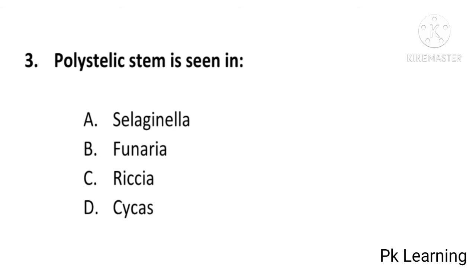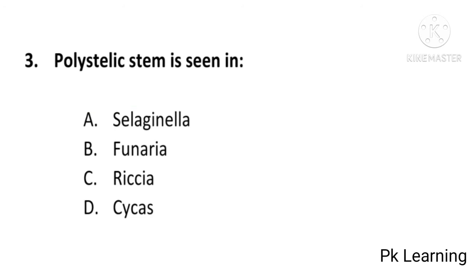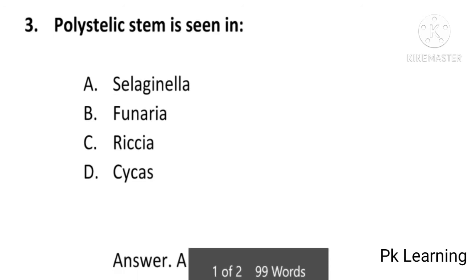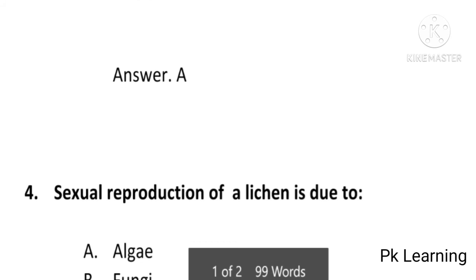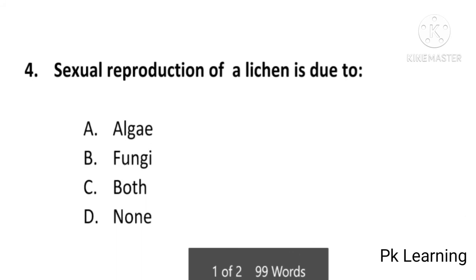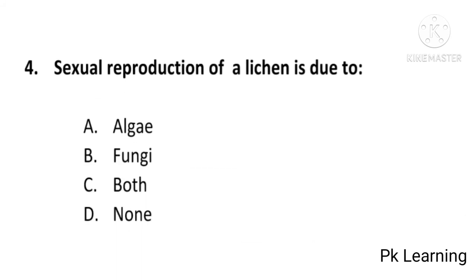The answer is A — Selaginella. Polystoelic stem is seen in Selaginella; A is the correct option. Next question: sexual reproduction of a lichen is due to algae, fungi, both, or none of these? The answer is B — fungi.